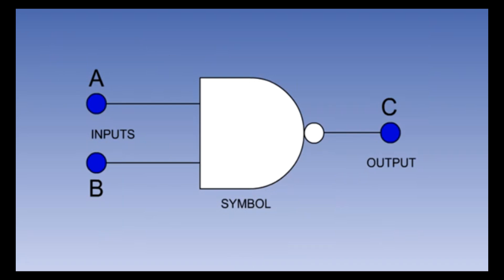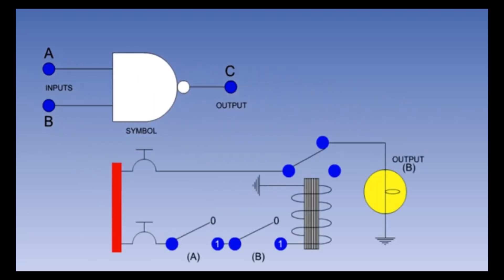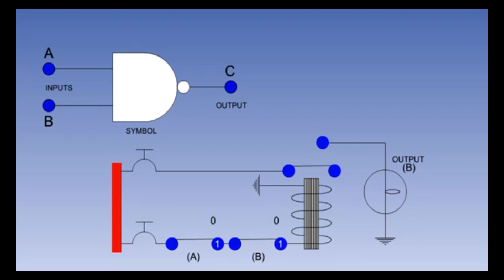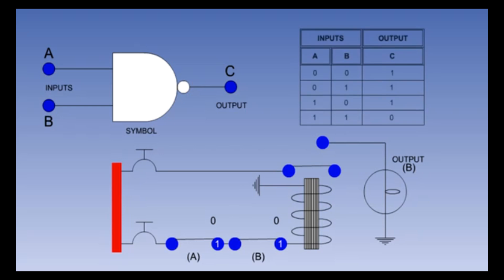The NAND gate — or NOT AND gate — has the same symbol as an AND gate apart from a small circle at the output. The NAND gate is an AND gate with an inverted output. The output of this gate will be one if any input is zero — this is the exact opposite of an AND gate. In the electrical circuit for a two-input NAND gate, with the relay de-energized the light will be illuminated, indicating an output of one. The two switches A and B are in series controlling the electrical supply to the coil of the relay. Only if both switches are closed will the relay be energized, causing the light to go out and indicating an output of zero.